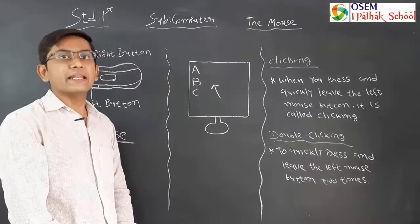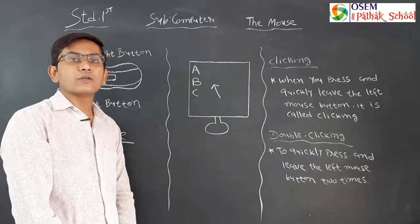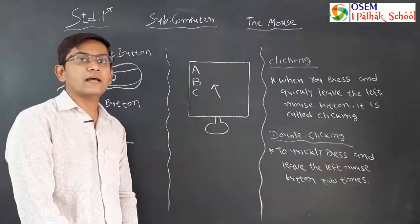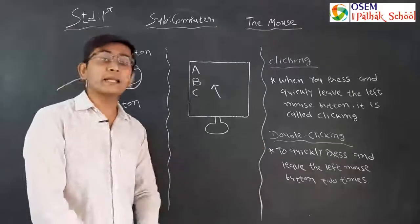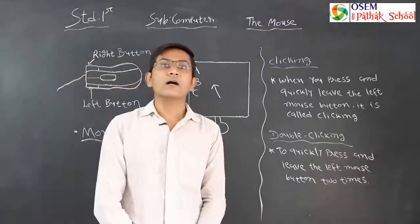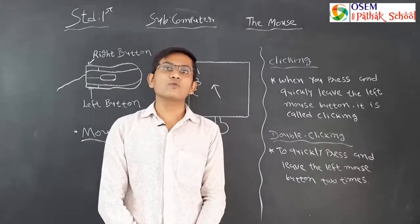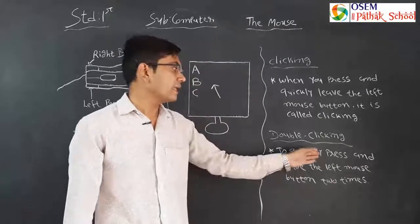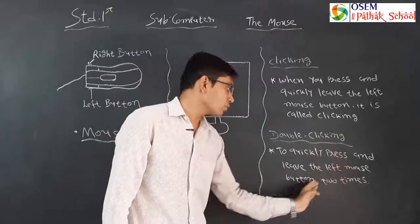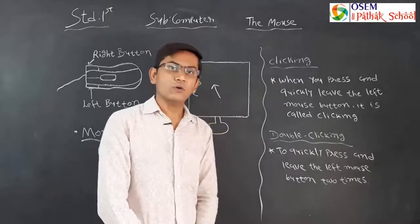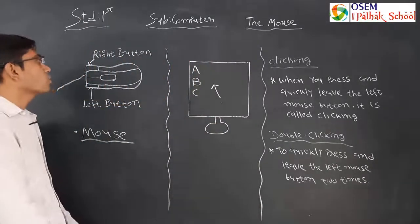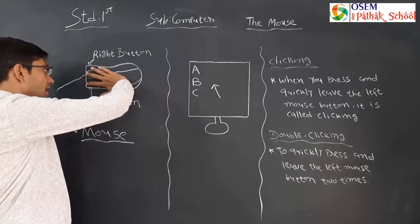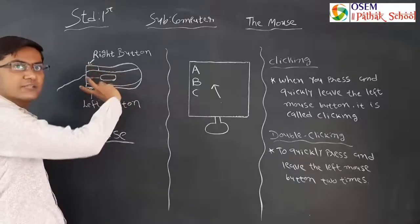When you want to select any item, you can use clicking. The next action is double clicking. For double clicking, you have to hold the mouse with your palm and quickly press and release the left mouse button two times. When you press and release the left mouse button two times, it is called double clicking.